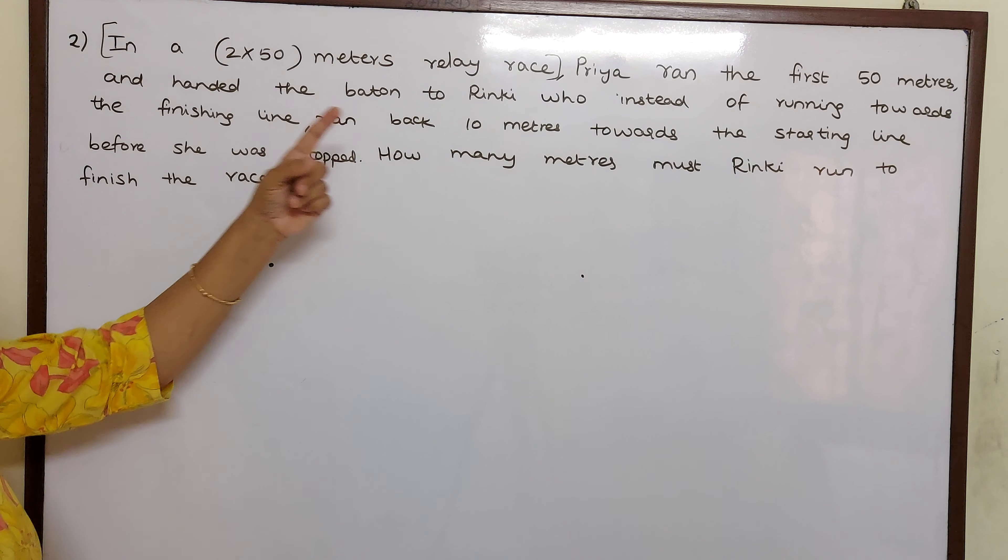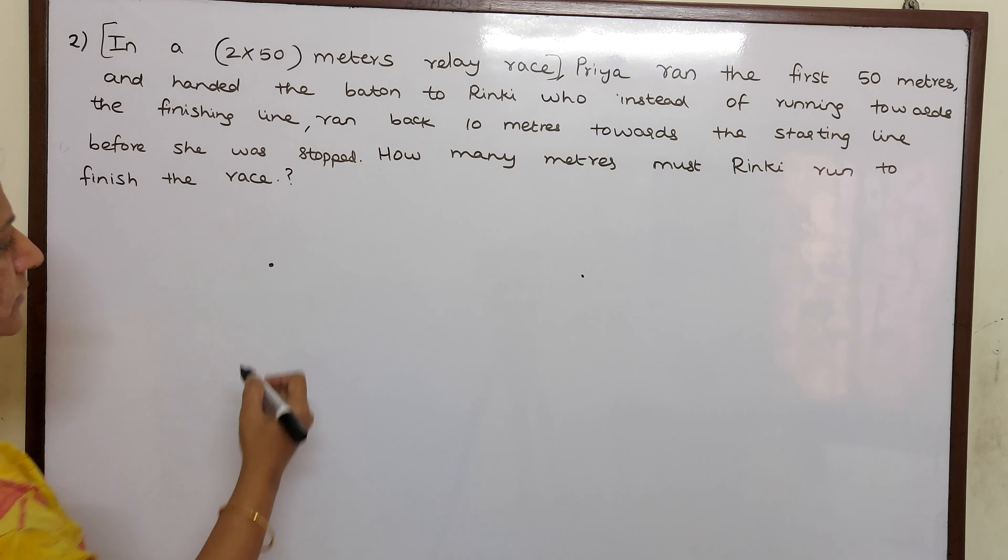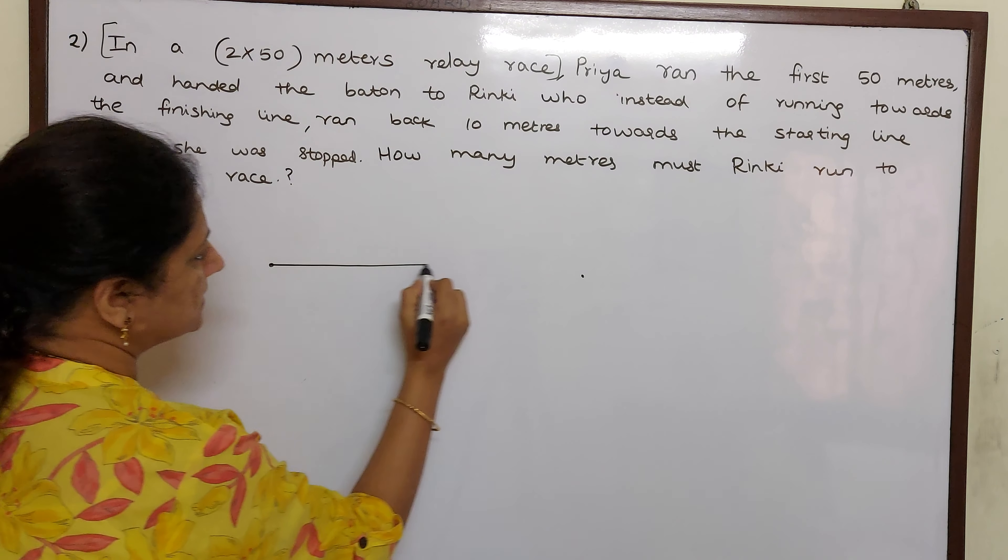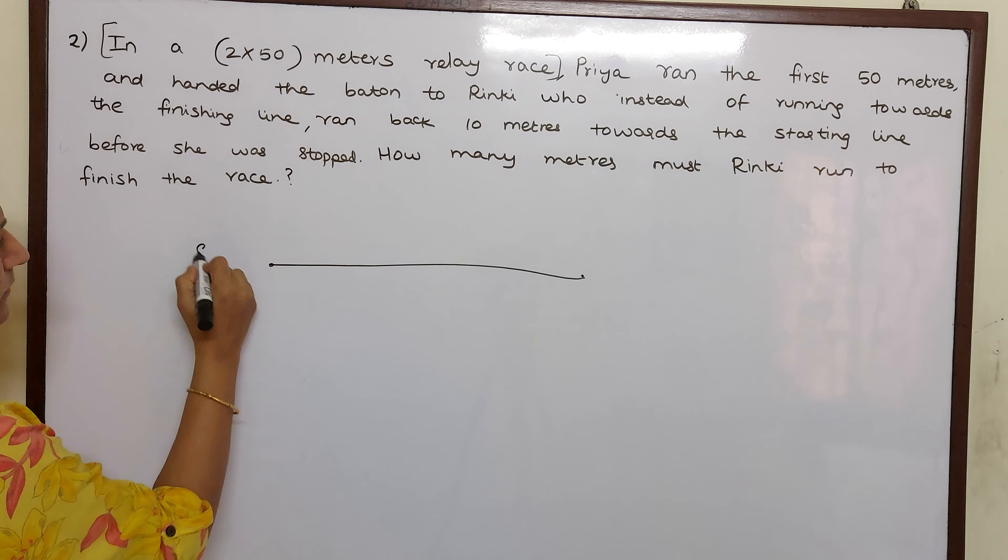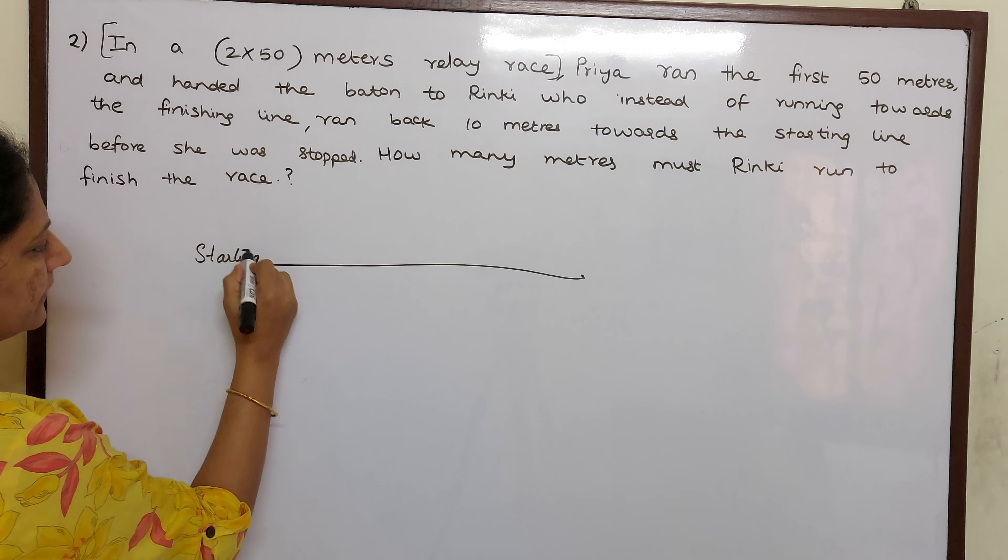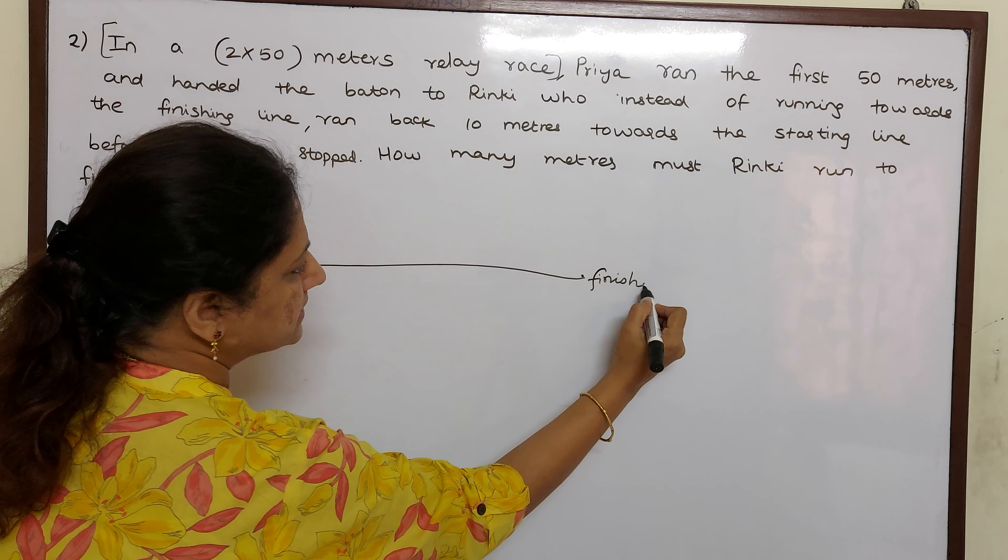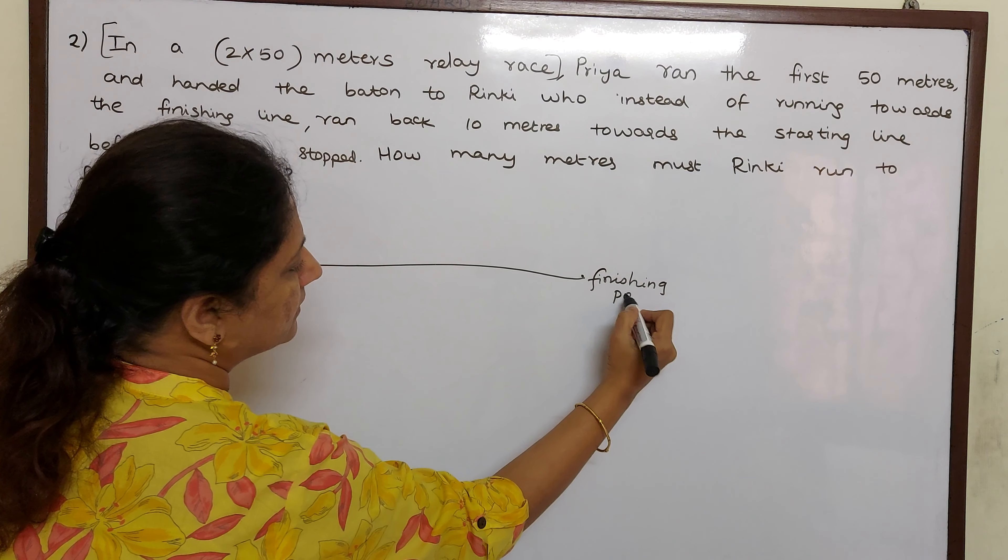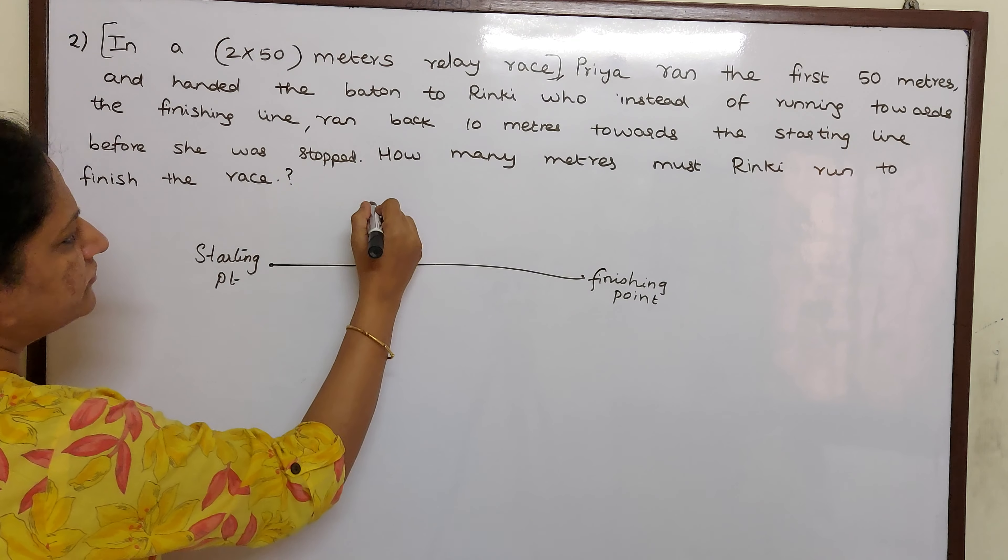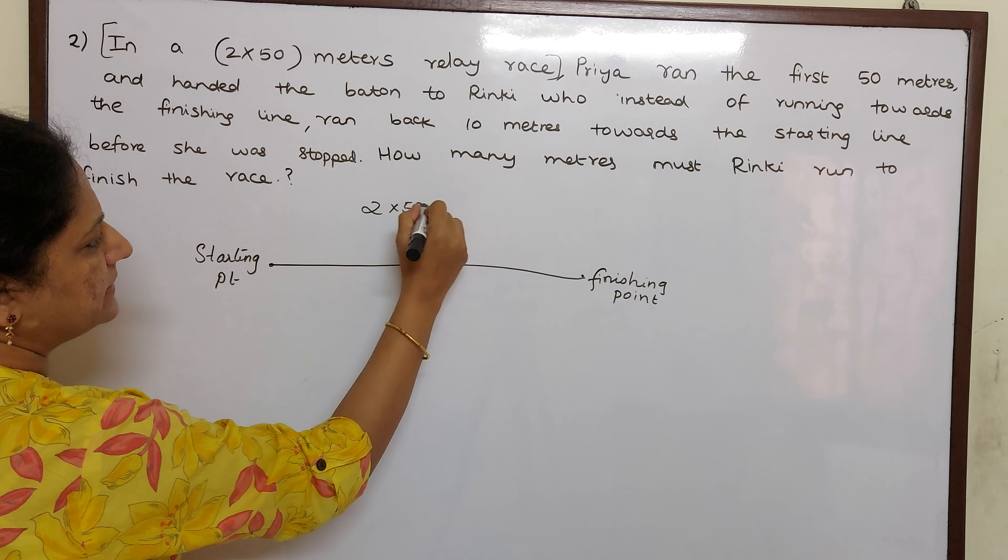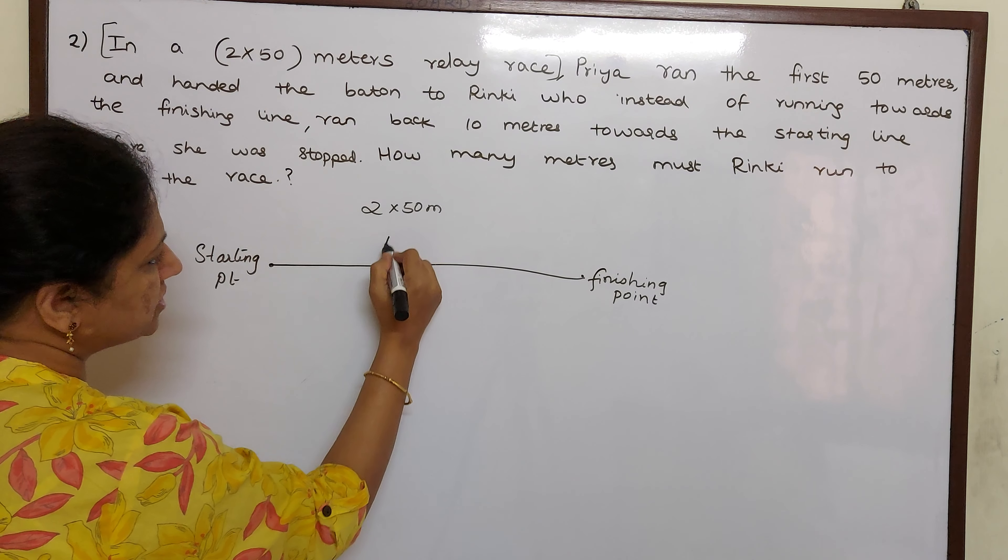where Priya and Rinky are going to run as partners. So let us assume this to be the starting point and this to be the finishing point. 2 into 50 meters means this is a 100 meter stretch children.